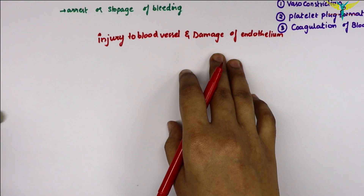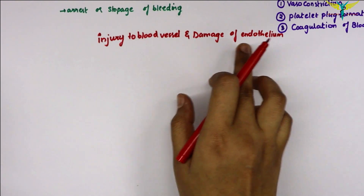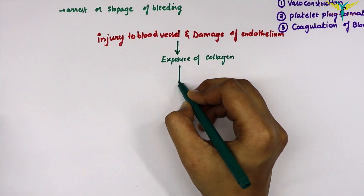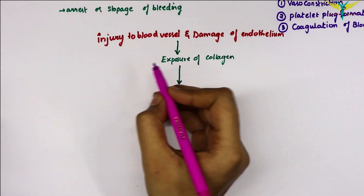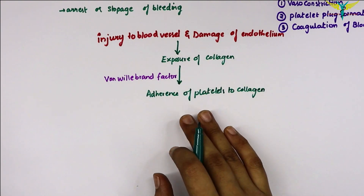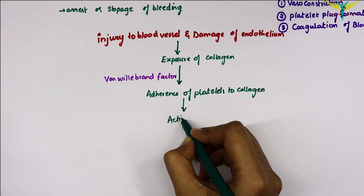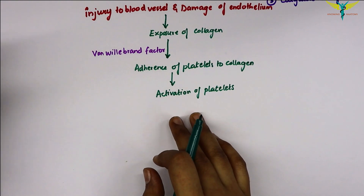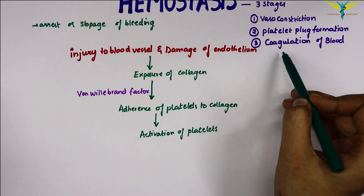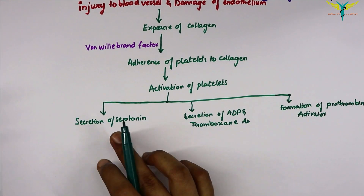The process of hemostasis is initiated due to injury to the blood vessel, which leads to damage of the endothelium. This causes exposure of collagen, and due to the action of the von Willebrand factor, adherence of platelets to the collagen takes place. This adherence leads to activation of the platelets, which then act in the process of hemostasis.